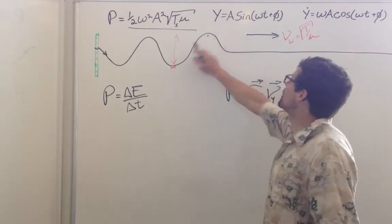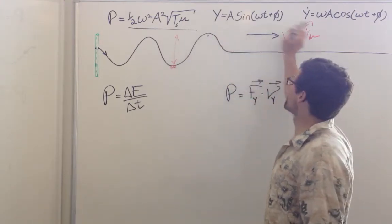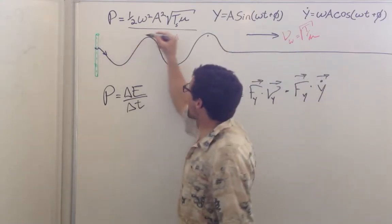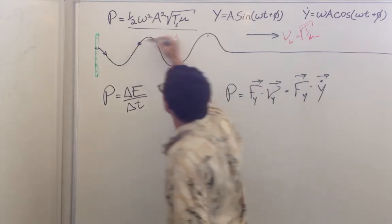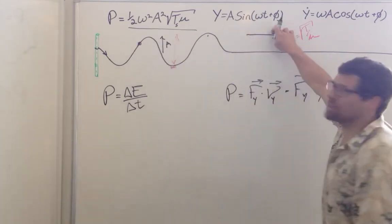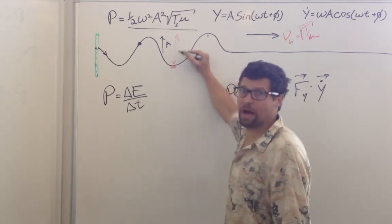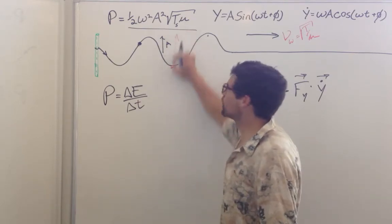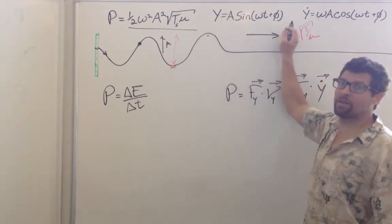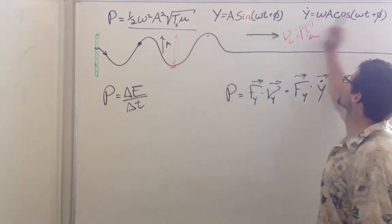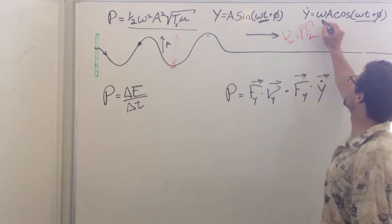As this wave travels, it can be described by the wave function where the y position at any given time is equal to the amplitude times sine of (ωt + φ), some phase shift. The velocity of that piece of string up or down — because the string piece is moving up and down while the wave moves this way — is y-dot, which is the derivative of this. Sine becomes cosine, and you take the derivative of the inside term to get omega.